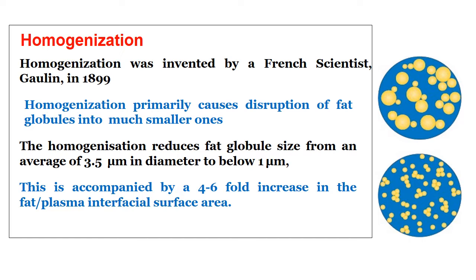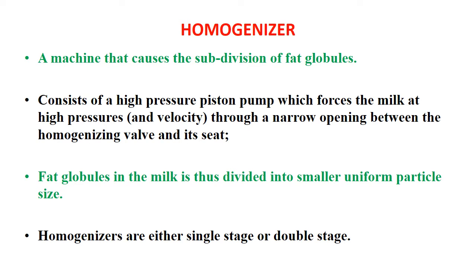Because larger fat globules are broken into smaller ones, the total surface area for the fat globule increases, and thereby there is an increase in the interfacial surface area between fat and the plasma. In the right side diagram at the top, we can see larger fat globule size before homogenization, and at the bottom, smaller fat globules distributed more uniformly. A homogenizer is a machine that causes the subdivision of fat globules. It consists of a high-pressure piston pump which forces the milk at high pressure and velocity through a narrow opening between the homogenizing valve and its seat, dividing fat globules into smaller uniform particle size.